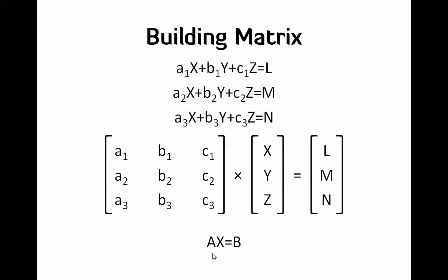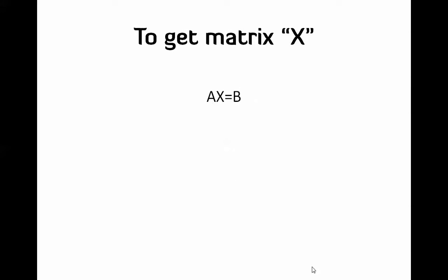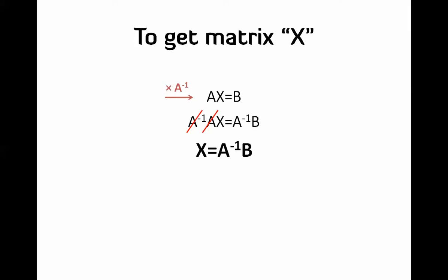So this gives us the simplified form AX = B. Our goal is to find X, the variables. What we do is multiply both sides by A⁻¹, the inverse matrix of A. This cancels A on the left side, and we end up with X = A⁻¹B. So we can calculate X by multiplying the inverse of A by B, which means we need to find A⁻¹ before solving the equation.